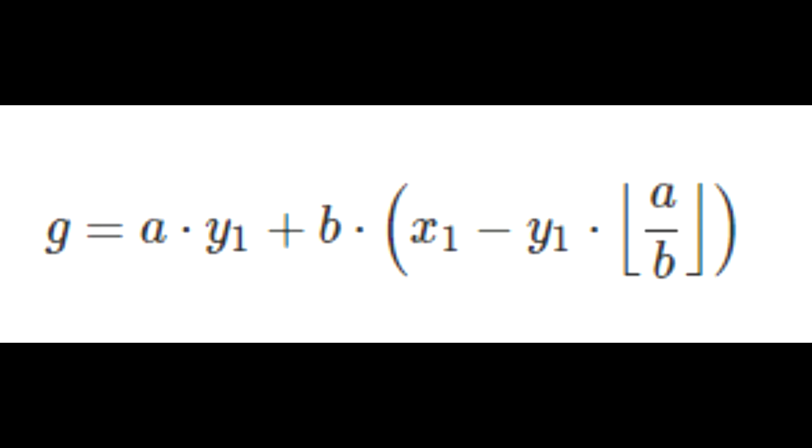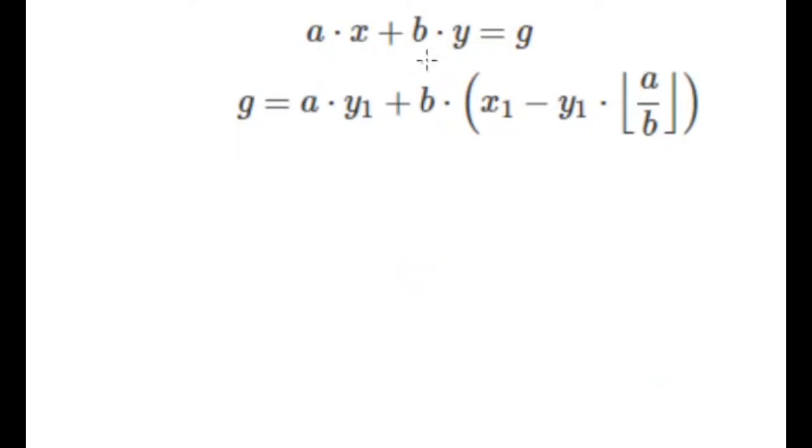So now let's compare this equation with AX plus BY. If we were to compare this new equation with our old equation, we would see that this X is actually going to equal Y1, and this Y is going to equal X1 minus Y1 times floor of A divided by B.